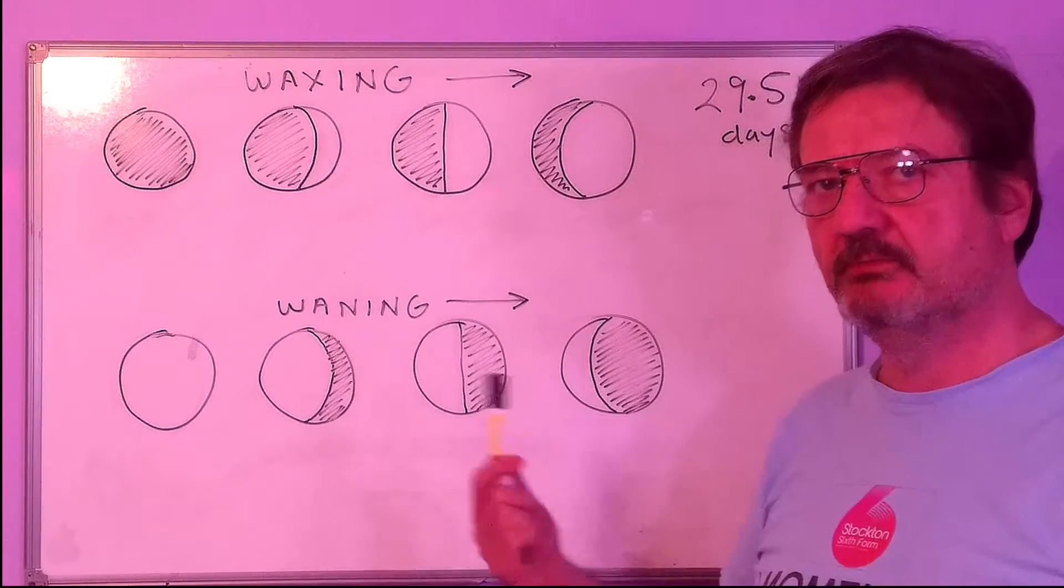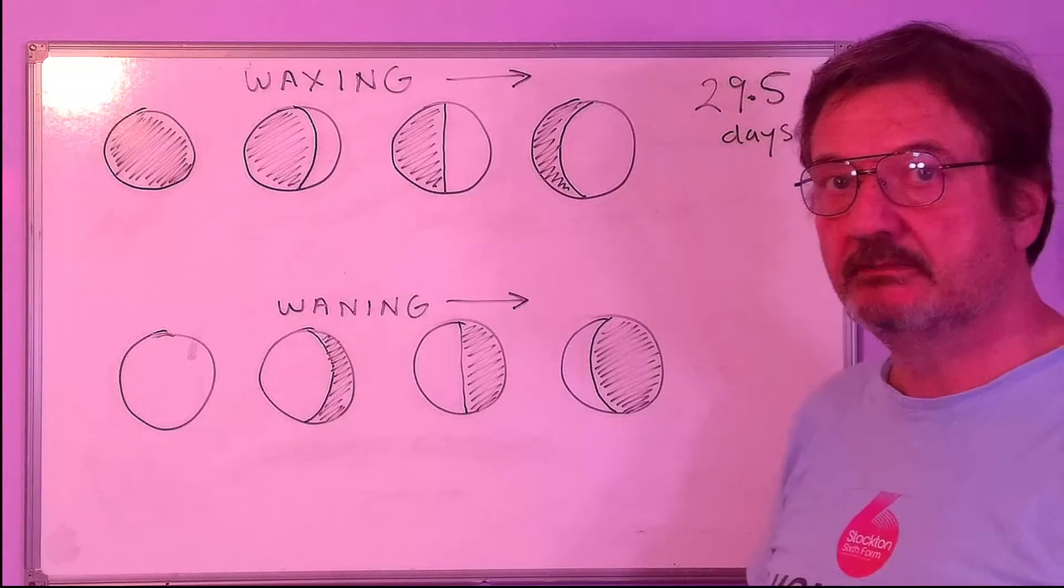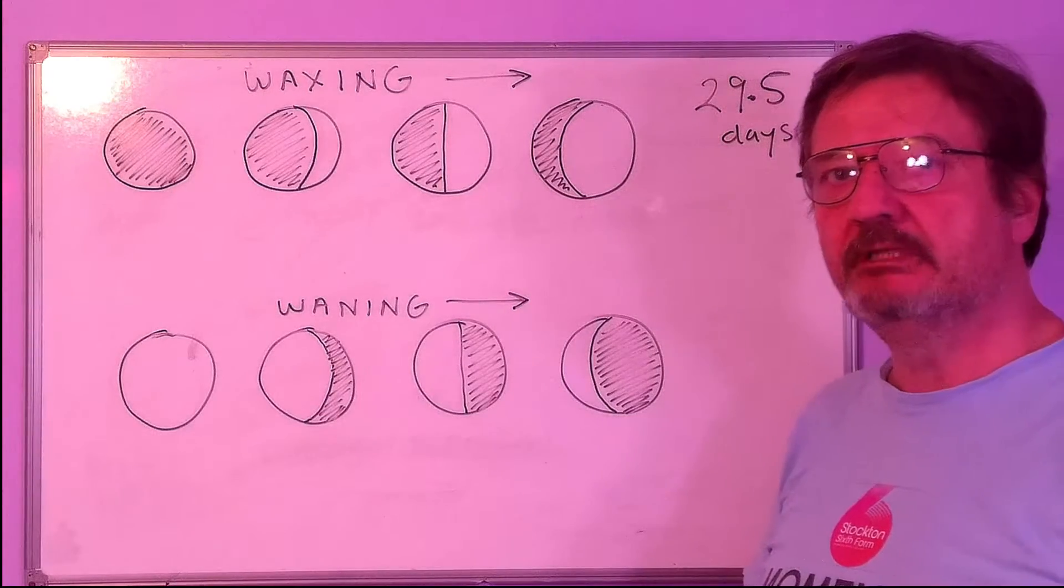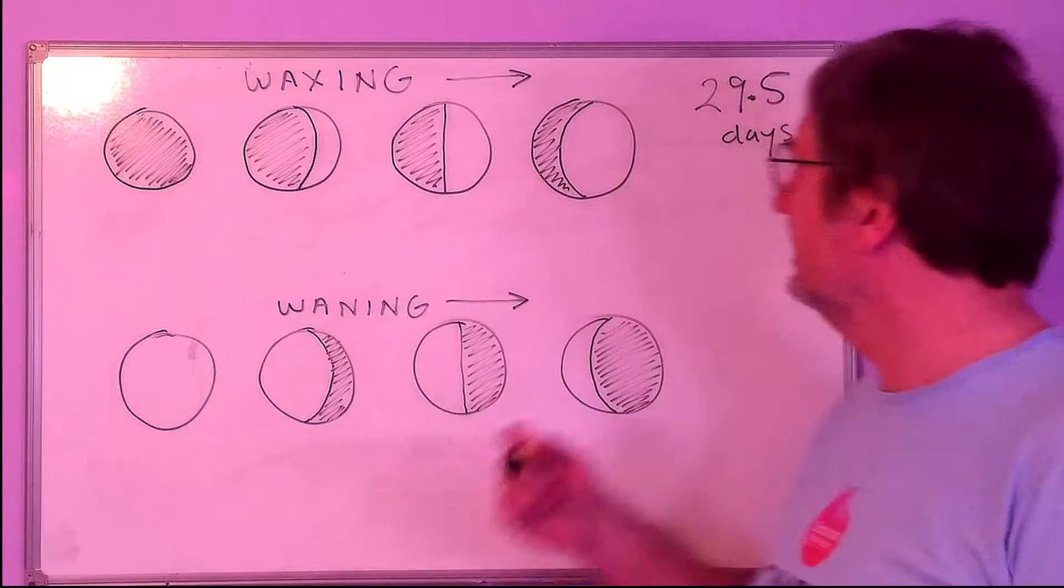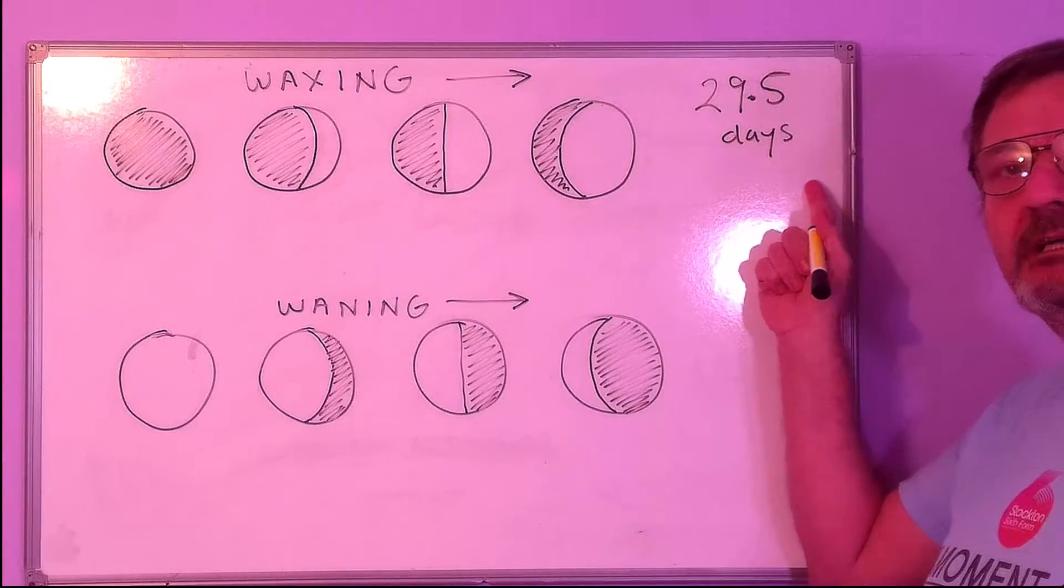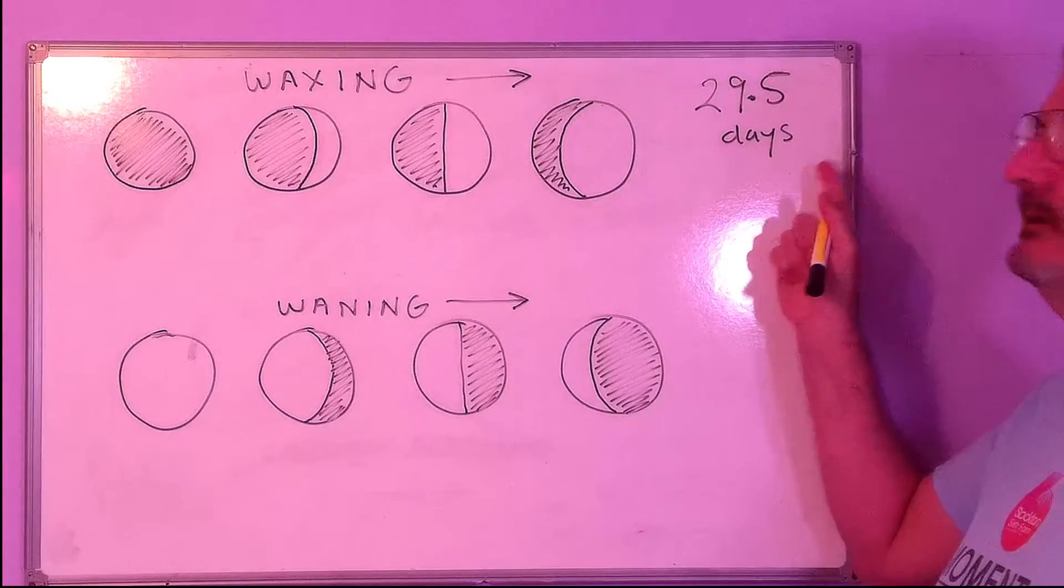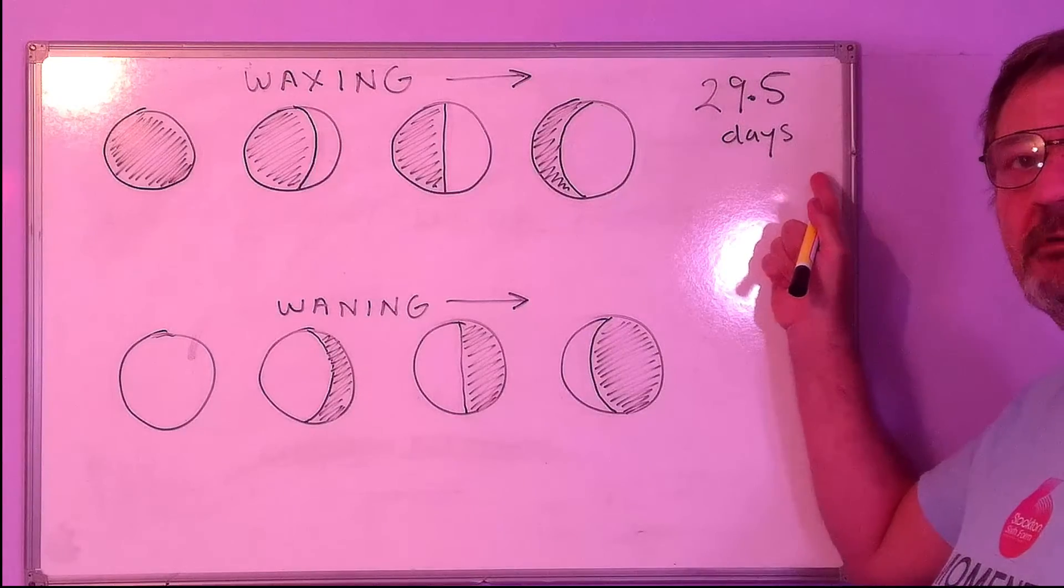You need to be able to sketch them. If you're asked to sketch one of them, you need to be able to recognize them. And you need to know that the cycle takes 29.5 days. Remember, 29.5 days.